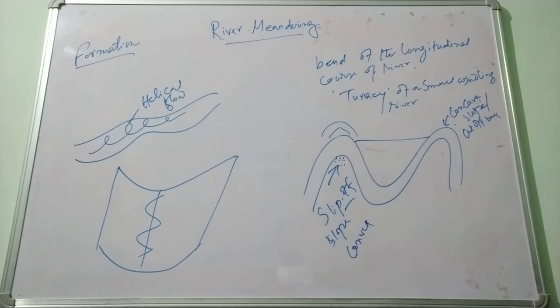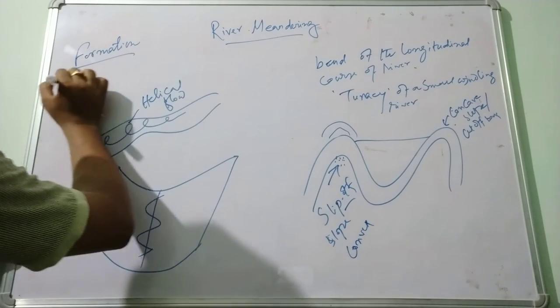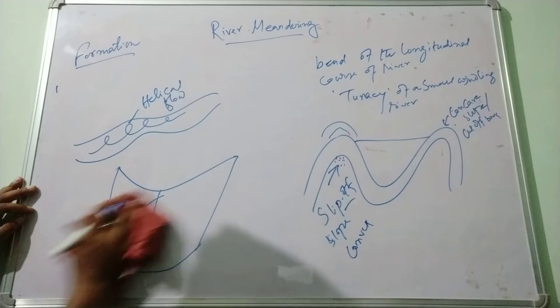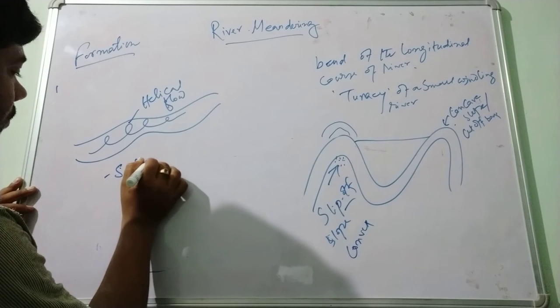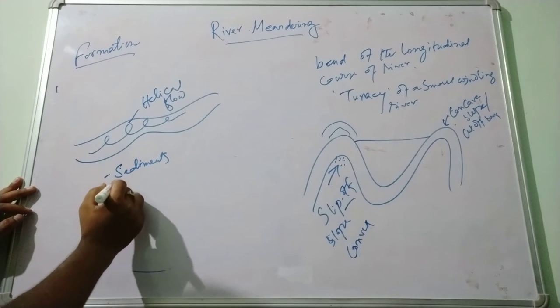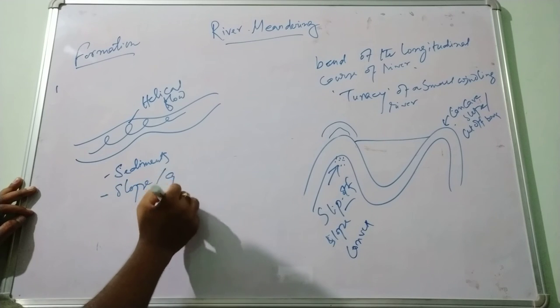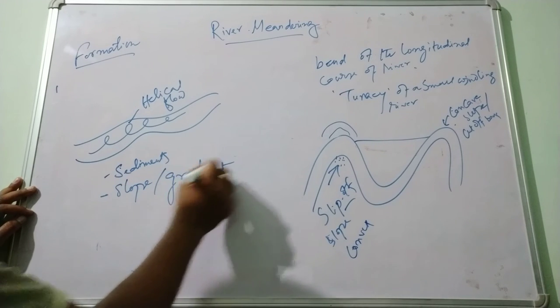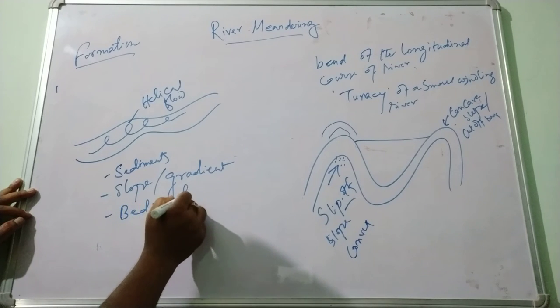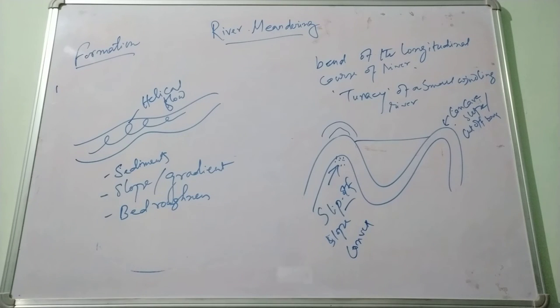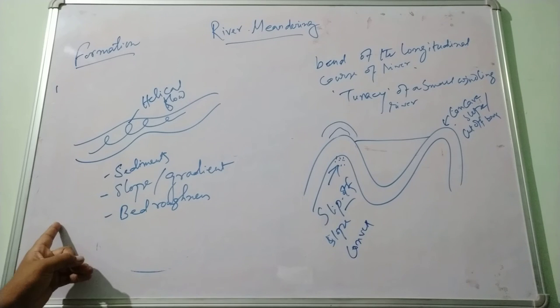The development of the meanders is caused as the result of the disruption of the uniform process channel, which is caused due to sediments, slope or gradient, and bed roughness. These are the factors that cause the disruption of the flow in the course of the river.